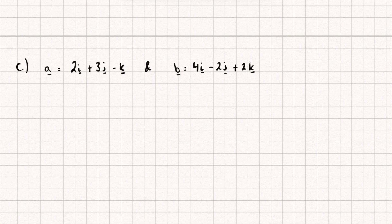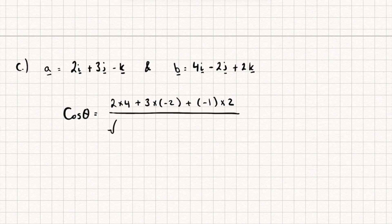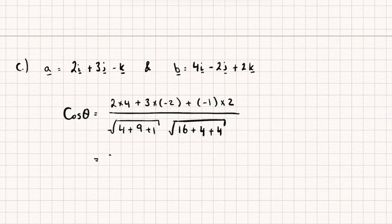For the third example, we have two vectors a and b and we do exactly the same thing. Cosine theta equals a dot b, which is 2×4 plus 3×(-2) plus (-1)×2, divided by the magnitude of a — square root of 2² plus 3² plus (-1)² — multiplied by the magnitude of b — square root of 4² plus (-2)² plus 2². Putting that into my calculator gives zero, so taking the inverse cosine gives theta equal to 90 degrees. These two vectors are actually perpendicular to each other.